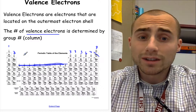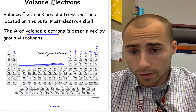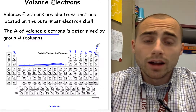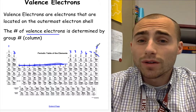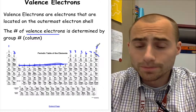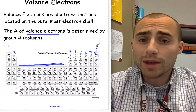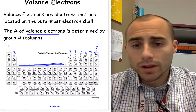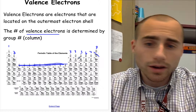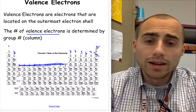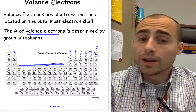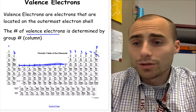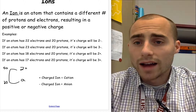Every single atom wants eight electrons on their outer shell. Because if you have eight electrons on your outer shell, then they're going to be happy — you're going to be peaceful, you're going to love life. So all of these — helium, beryllium, boron, carbon — they all strive to get eight valence electrons. And there's actually a way they can do that, and that's through ionization, through becoming an ion.